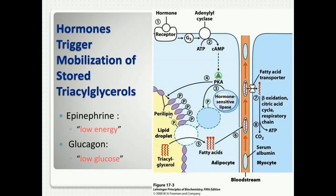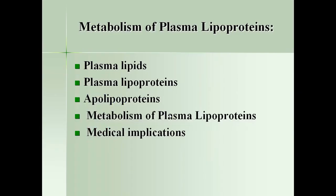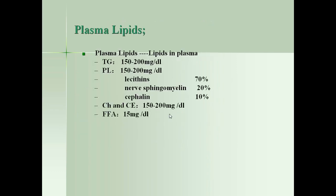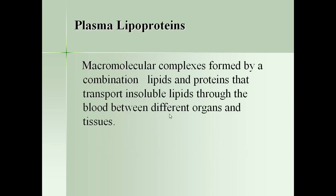We are going to discuss the metabolism of plasma lipoproteins. Plasma total lipoproteins exist in plasma at about 400 to 600 milligrams per deciliter. Plasma lipoproteins are spherical macromolecular complexes formed by the combination of lipids and proteins. They are found in plasma and involved in transport of insoluble lipids, fat-soluble vitamins, sterols, and cholesterol.